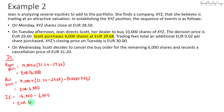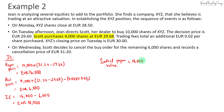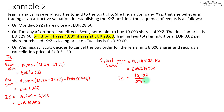The implementation shortfall is 16,000 minus 6,000, which equals 10,000 euros. Converting to basis points, the initial paper portfolio value is 10,000 shares multiplied by the decision price of 29.60, which equals 296,000 euros. So the implementation shortfall in basis points is 10,000 euros over 296,000 euros.